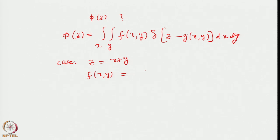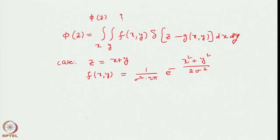Since it has two variables, a normalized Gaussian will be represented as (1 / (2π σ²)) times e to the power minus (x² plus y²) divided by 2σ². Supposing my joint distribution of two independent variables x and y is given by this Gaussian — this is a fairly simple situation, but it illustrates the point. And I am now required to project this distribution onto variable z defined by z equal to x plus y, or obtain the function phi(z).